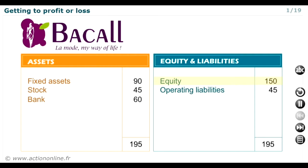Firstly, it's put together a body of financial resources: €150,000 in fixed funds — capital plus financial liabilities — and €45,000 in short-term funds, that's to say funds repayable in the short term. The total of these sources of funds therefore amounts to €195,000.